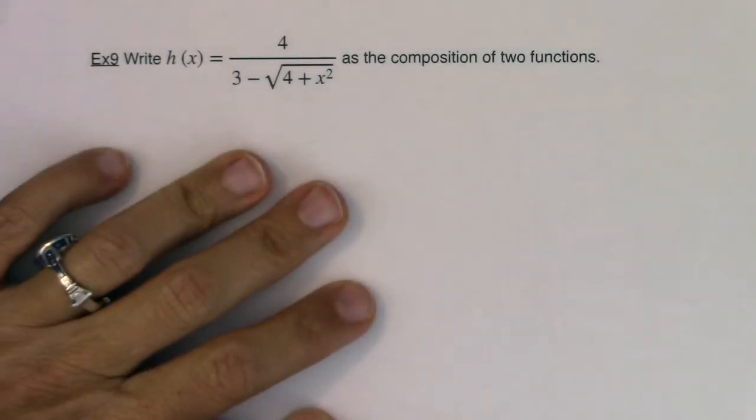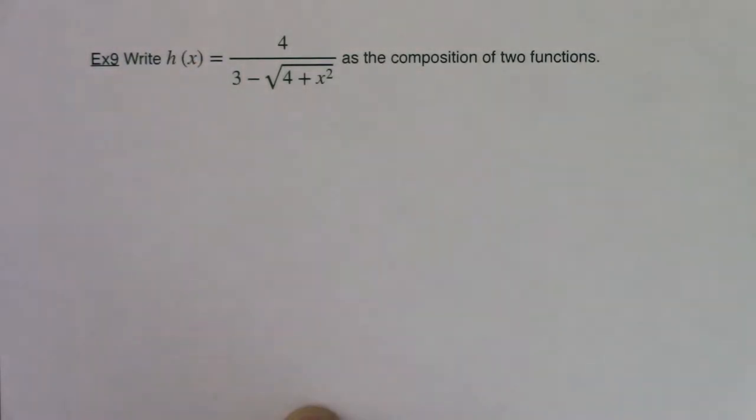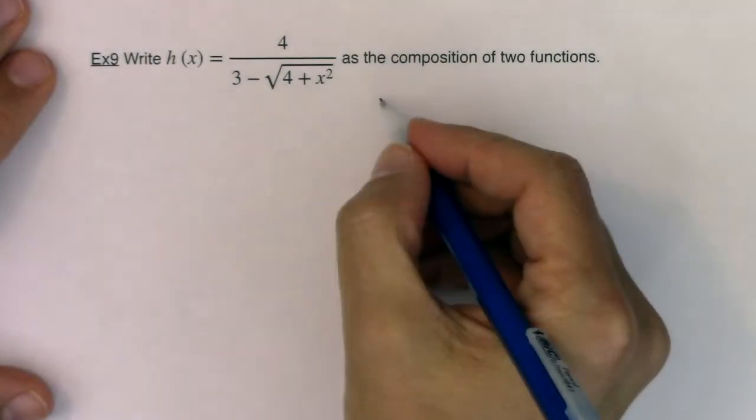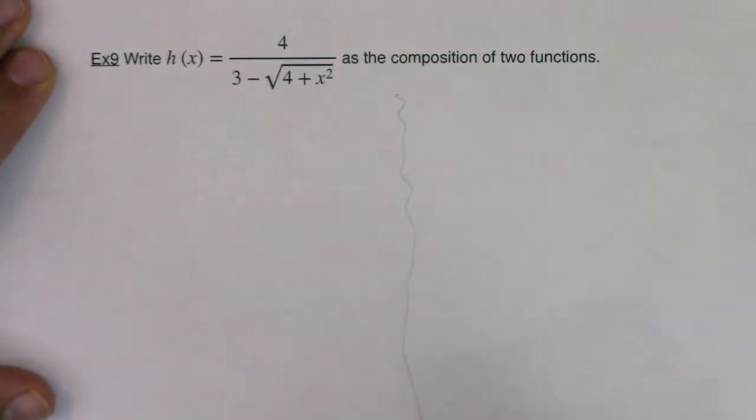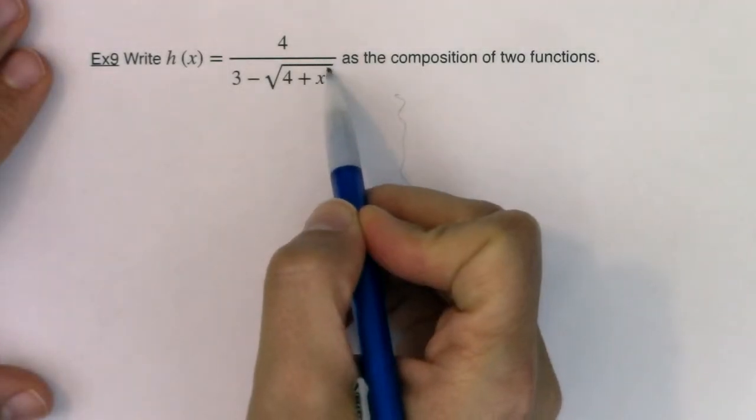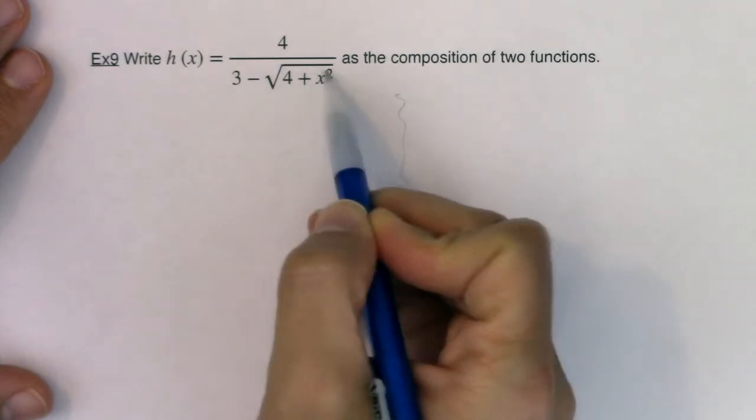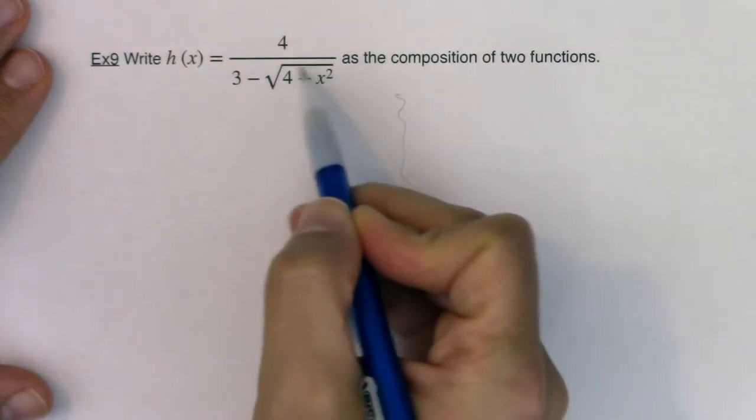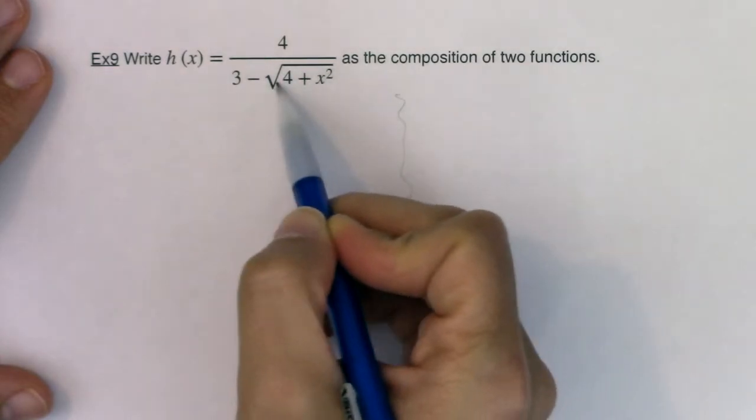Now there are many answers out here. I'm actually going to do two of them just to show you, and they're not unique. There's plenty more you could come up with. So I'm just going to put a separation mark here, and I want to give you one option. And I had said in the previous example, anything inside grouping symbols, and square roots are grouping symbols, those could be a pretty good indication of what your innermost function would be.